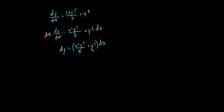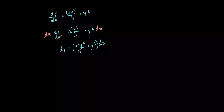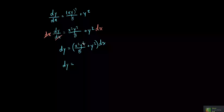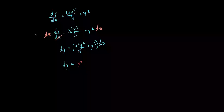Now we still have some y's over on this side. What we can do is pull out the y squared from this equation — this term has a y squared and this term has a y squared — so go ahead and pull a y squared out of both of these.